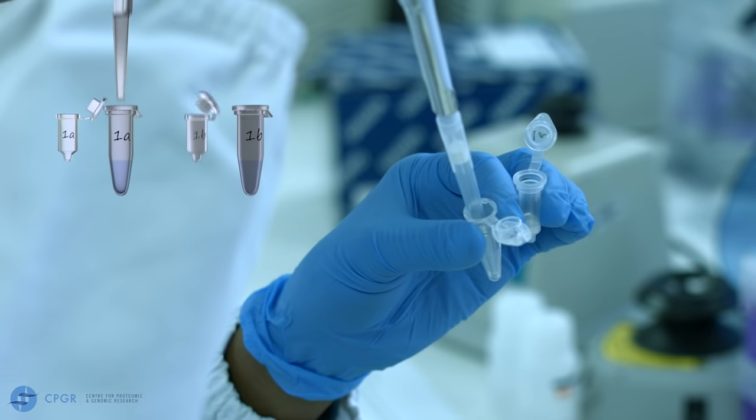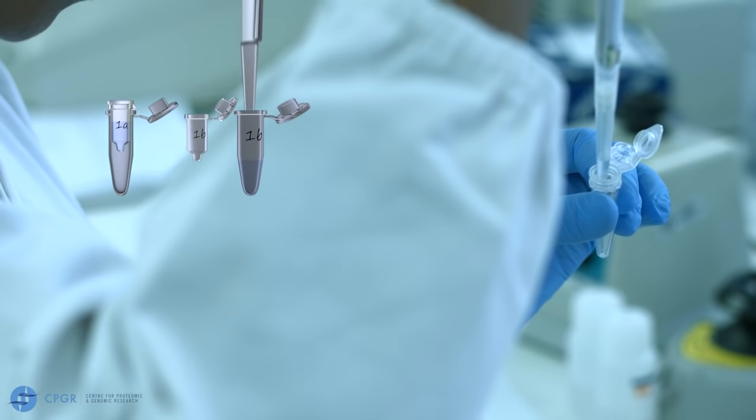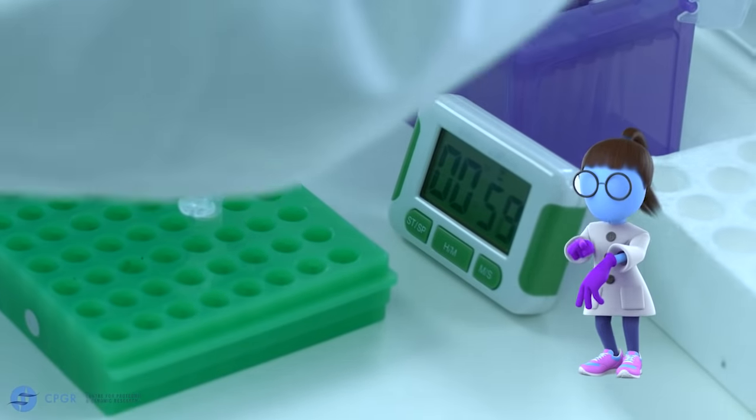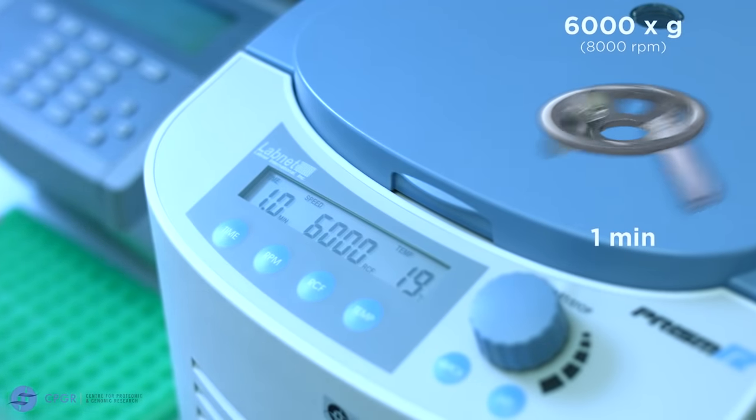Re-elute the filtrate, transferring this back onto the spin column. Repeat the incubation and centrifugation steps. This repeat elution step optimizes the DNA yield for each sample.